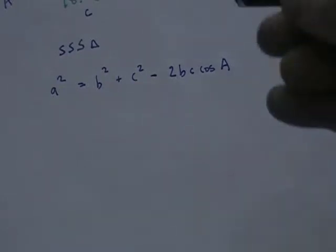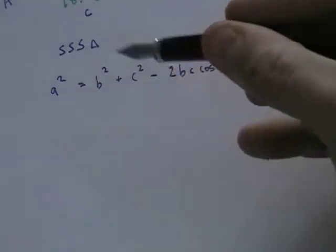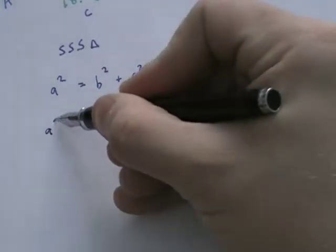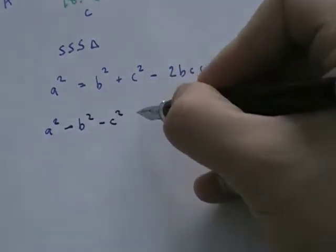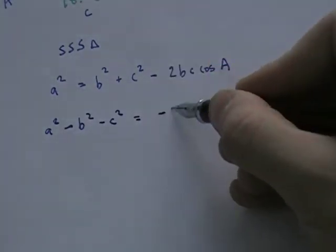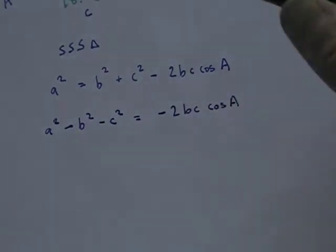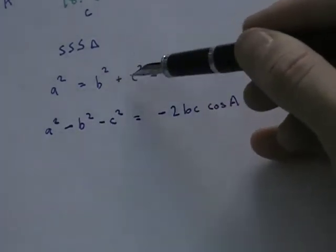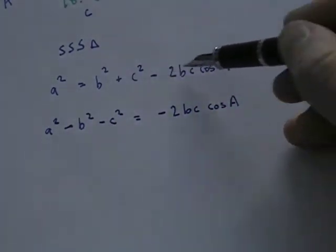So if I solve this, the first thing you need to do is move these two guys here over to the left hand side. So I end up with A squared minus B squared minus C squared equals negative 2BC cosine A. These were additive, I subtracted them.